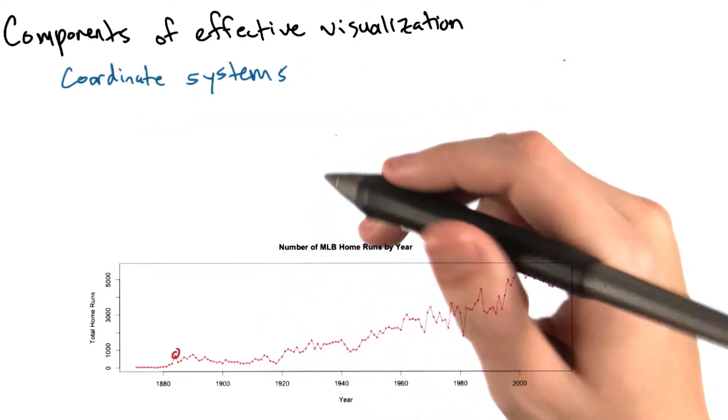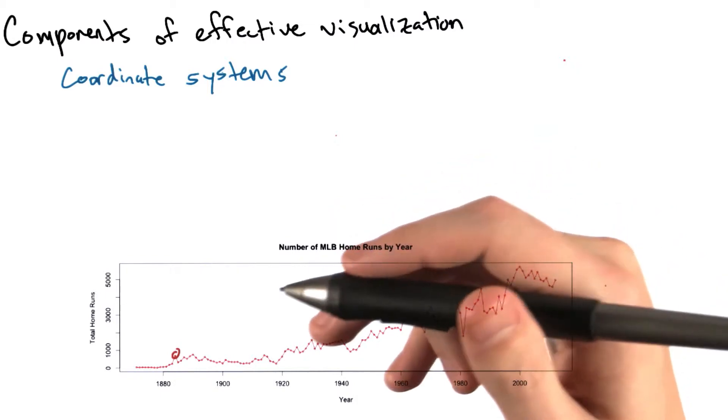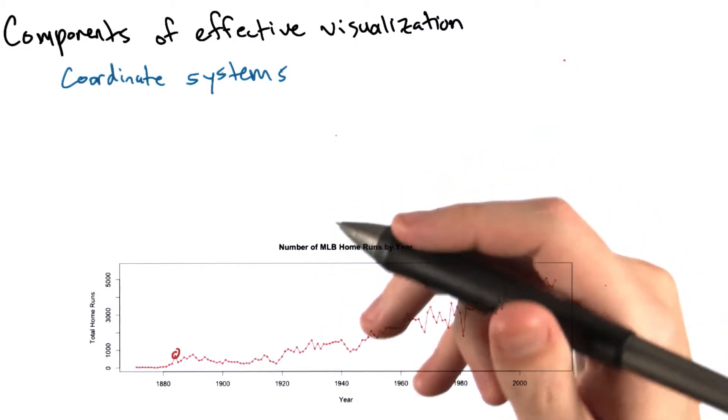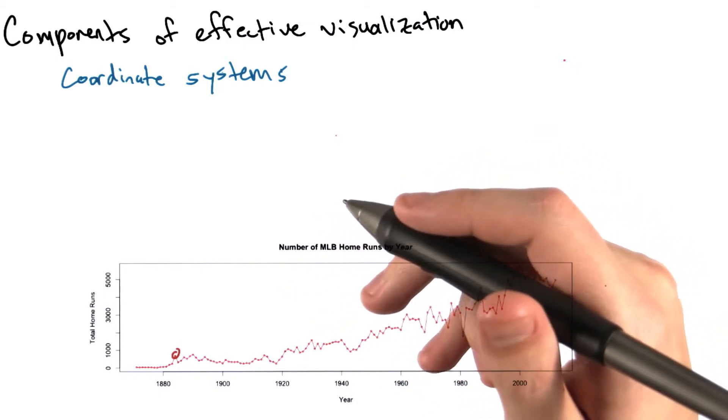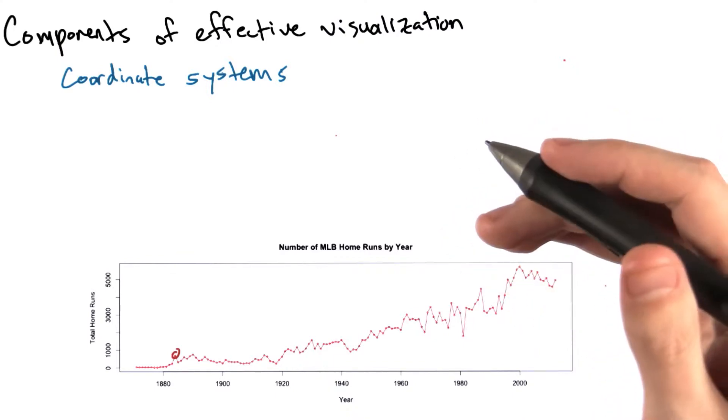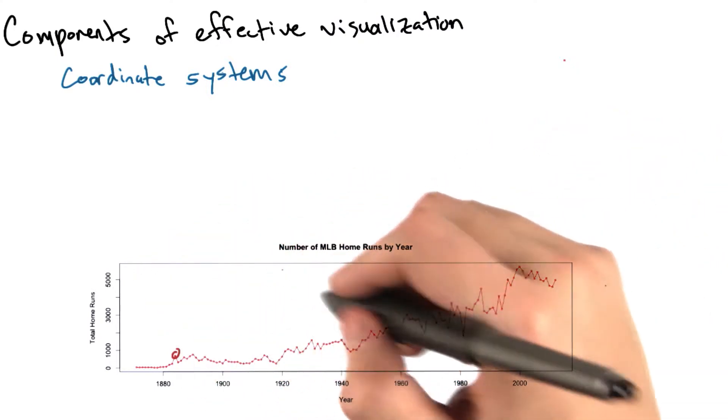There are also coordinate systems. We need to place our data points somewhere on the chart. A coordinate system gives us a structured space that dictates where the shapes and colors should go. This gives meaning to an x, y coordinate on this chart.